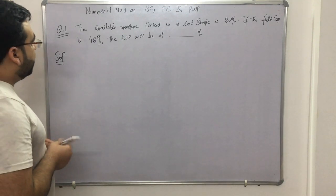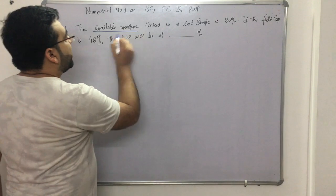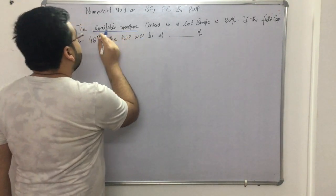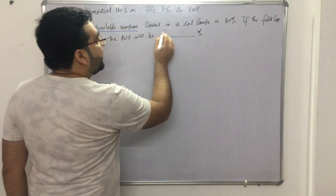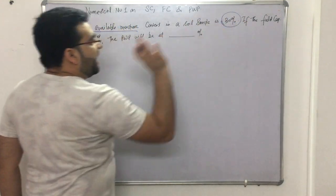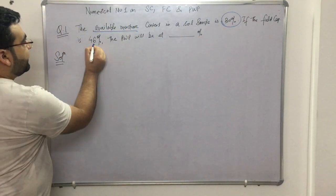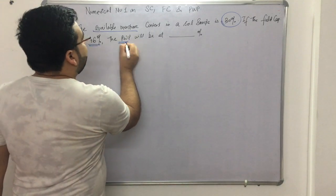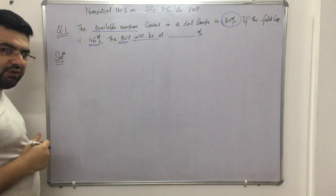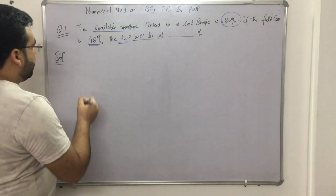The first numerical is on available moisture content. It is given in a soil sample as 30%. If the field capacity is 46%, the permanent wilting point will be at how much? This is a very straightforward, simple question.